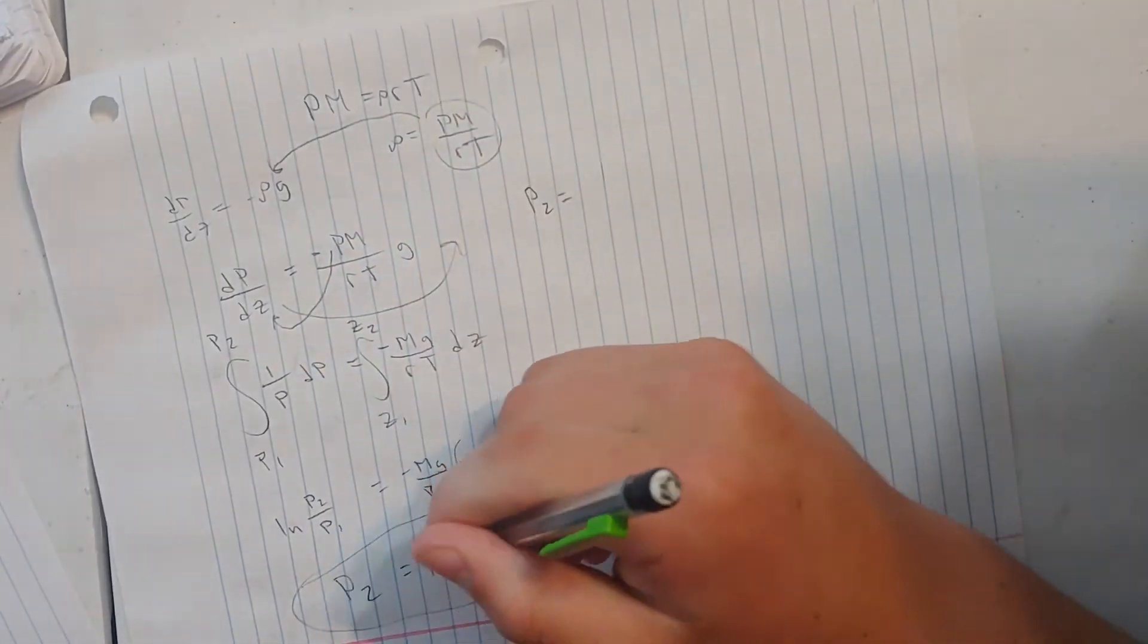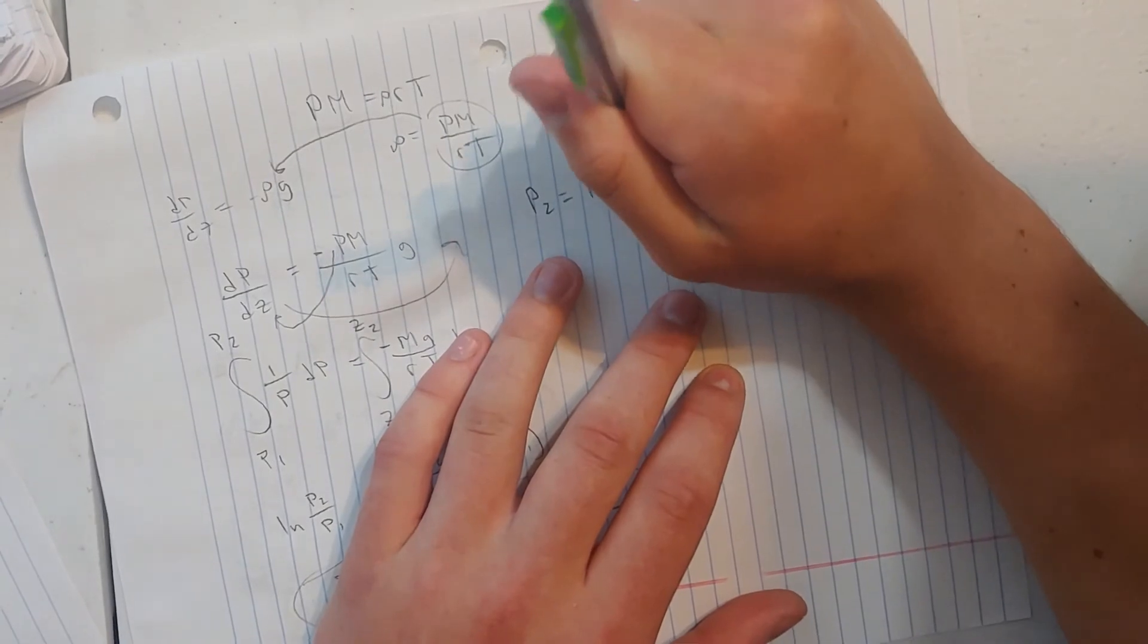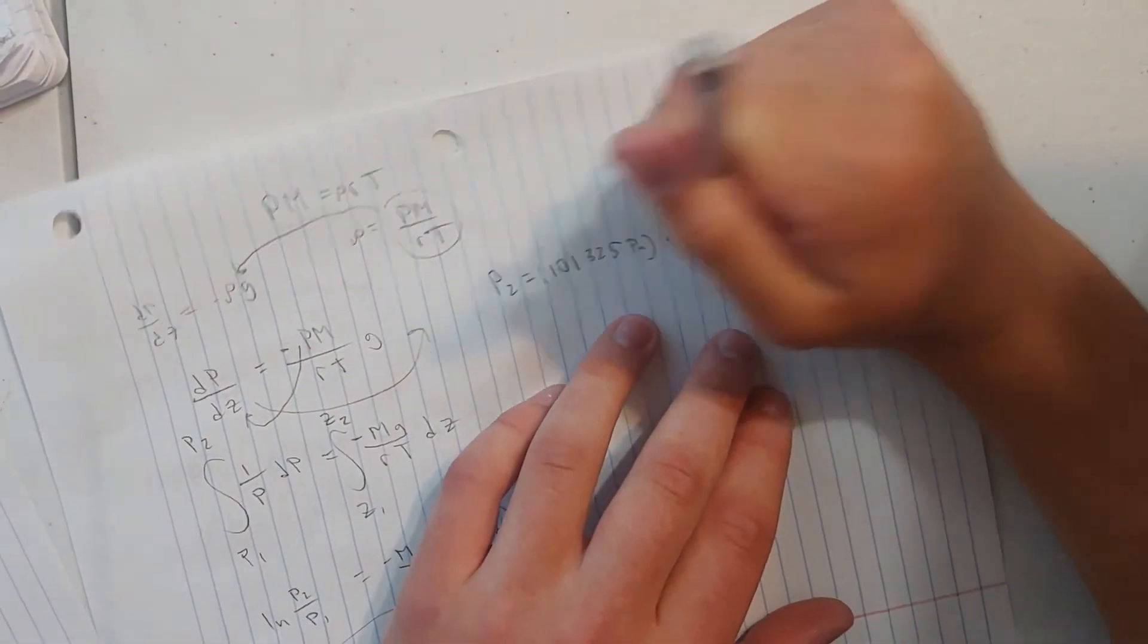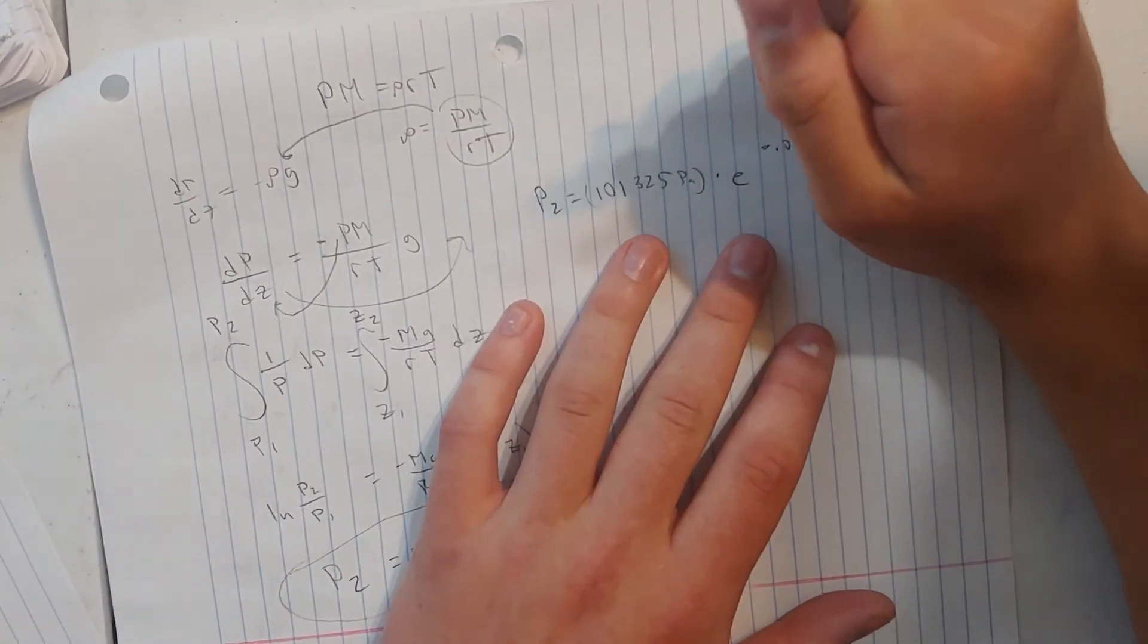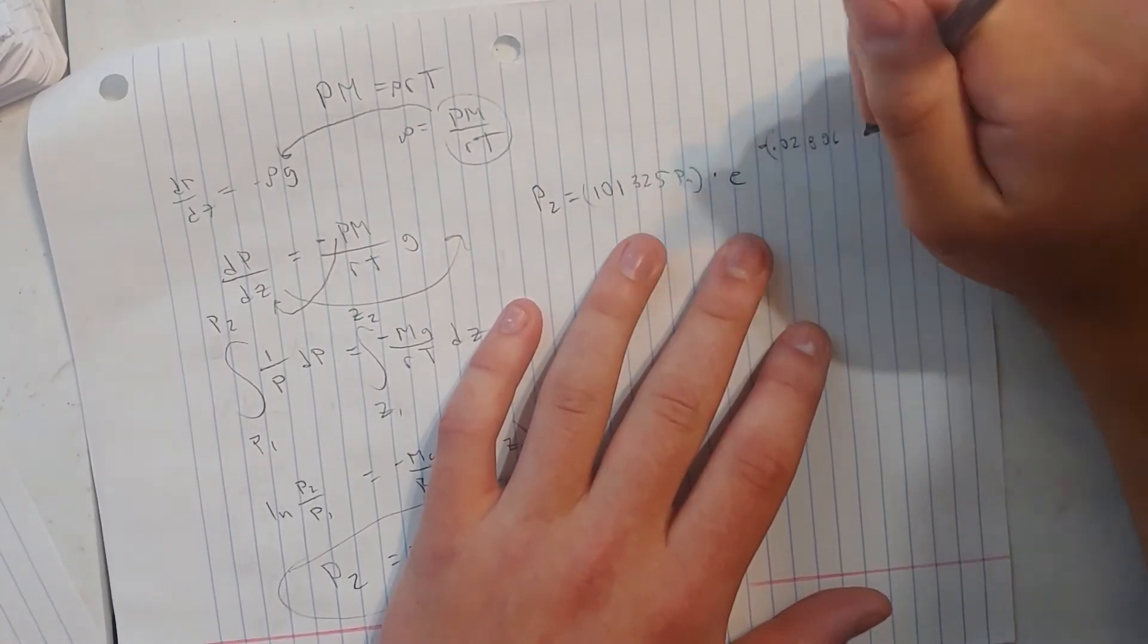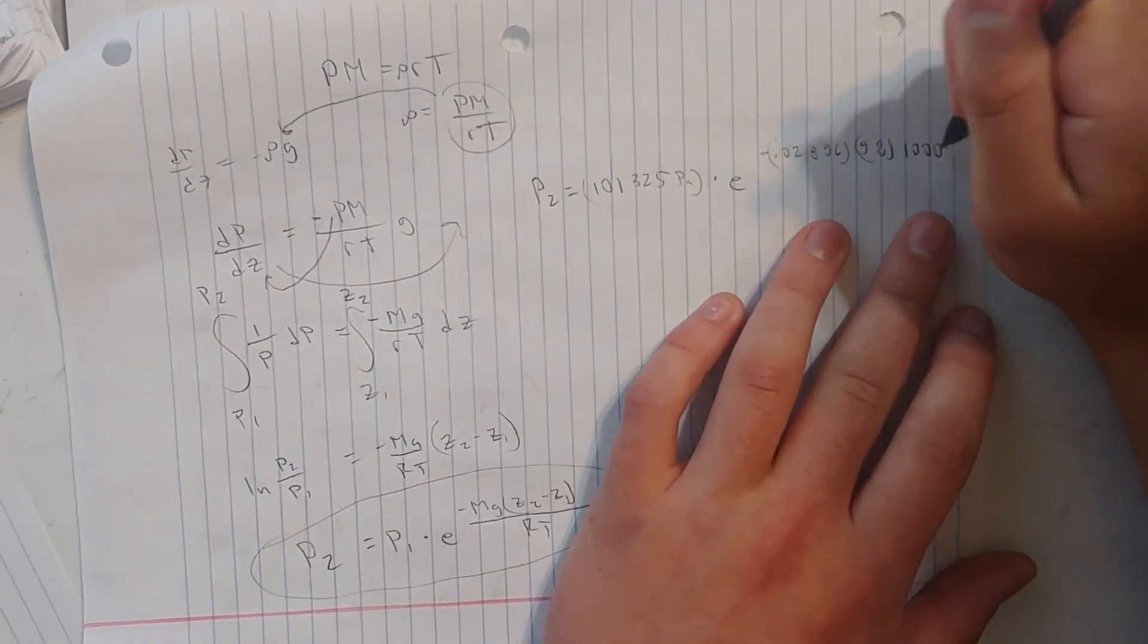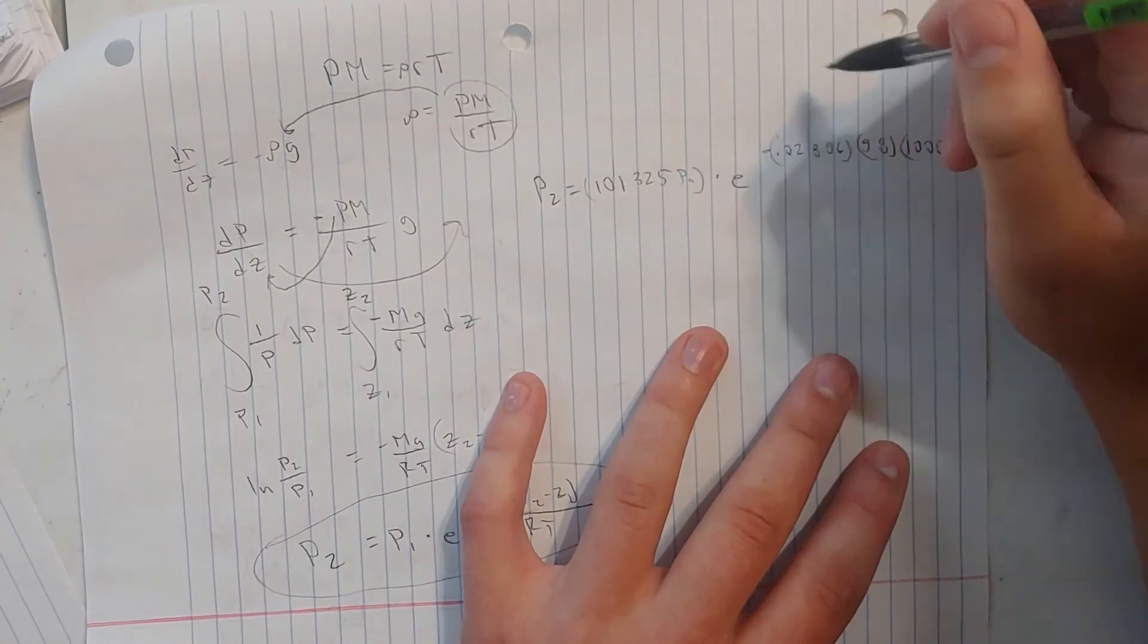So p2 equals p1. p1, we're going to assume we're at about sea level, so that's going to be 101,325 pascals times e. The molar mass of air is roughly 0.02896 kilograms per mole times our gravity constant 9.8. And we're going to try to solve pressure for if you were 1,000 meters in the air above sea level.